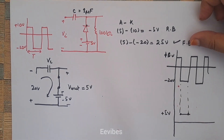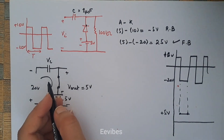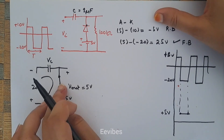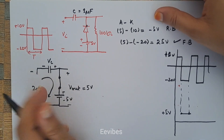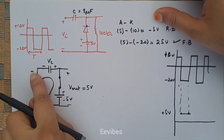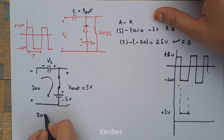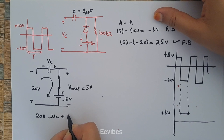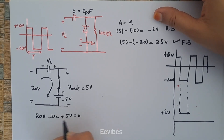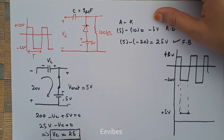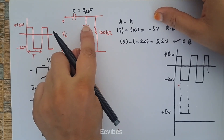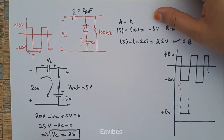Now let's determine the capacitor voltage V_C when the diode is forward biased. The capacitor charges with the same polarity as the voltages connected across its terminals. Applying KVL: plus 20 volts minus V_C plus 5 volts equals 0, so 25 volts minus V_C equals 0, which implies V_C equals 25 volts. The capacitor charges to 25 volts because 20 volts are present at the cathode and 5 volts at the anode.